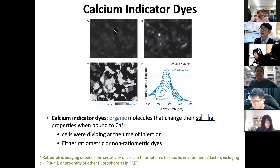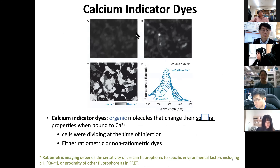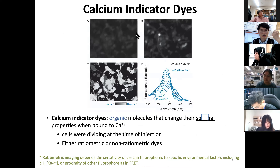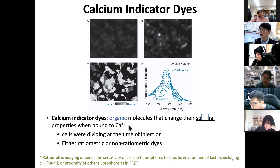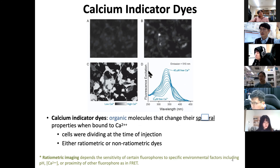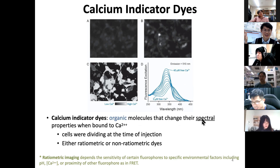Now I'll discuss calcium indicator dyes — I'm talking about exogenous dyes you pour into cells and tissue, called calcium indicator dyes. These are organic dyes that change their excitation or emission spectra depending on calcium concentration.